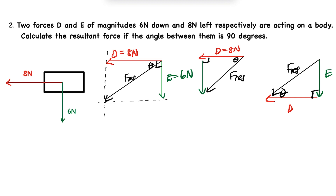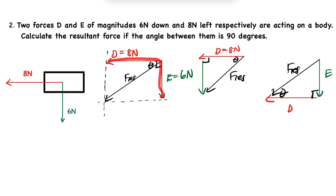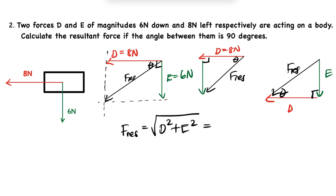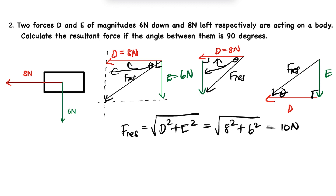For the calculation, we are looking for the longest side — the hypotenuse — given the two adjacent sides. Using the theorem of Pythagoras: F_res = √(D² + E²) = √(8² + 6²), and the answer is 10 Newtons.